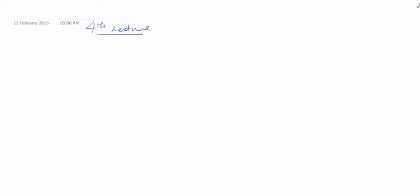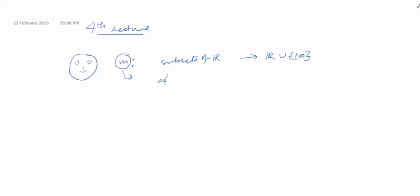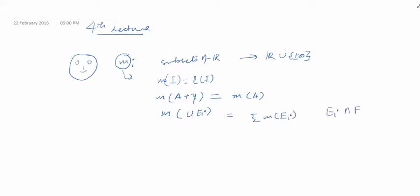Welcome to this fourth lecture on measure theory. We have this fellow John who wants a function m defined on subsets of R to extended R. He wants m to be a generalization of the length function l, so he wants m of I to be l of I, m of A+y to equal m of A (translation invariance), and m of the union of disjoint E_i's to equal the summation of m of E_i's — a countable union with countable summation.